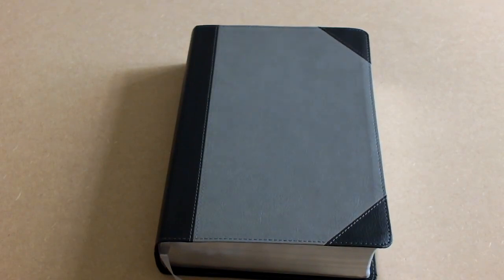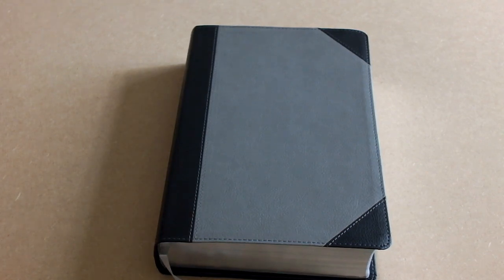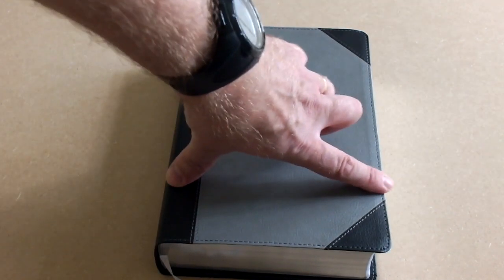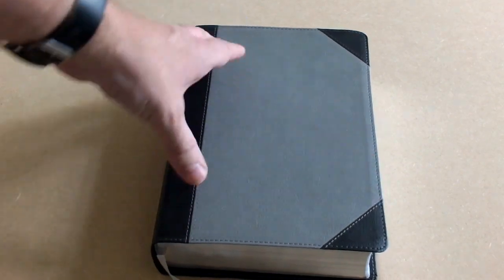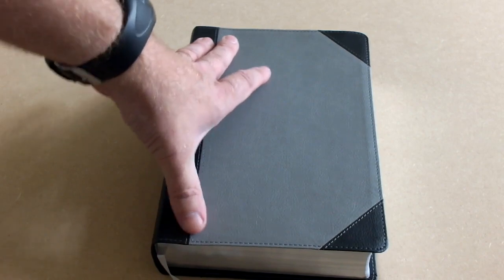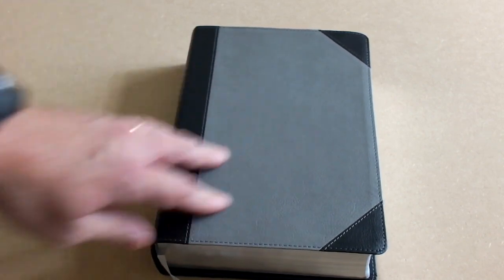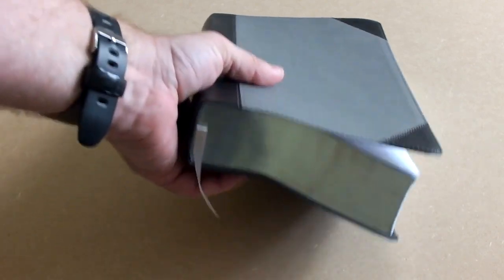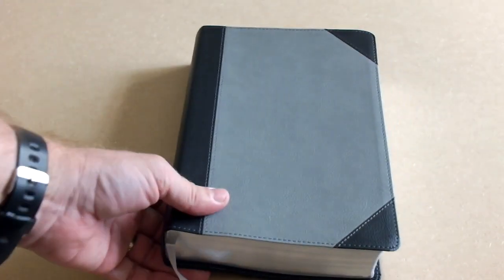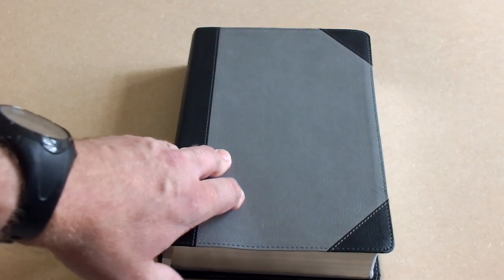I'll give you a note about the sizes. It is roughly six and three quarter inches wide, nine and a half inches tall and just around just under two inches thick. So it is a big Bible. Not as big as some study Bibles but nevertheless it is quite thick.